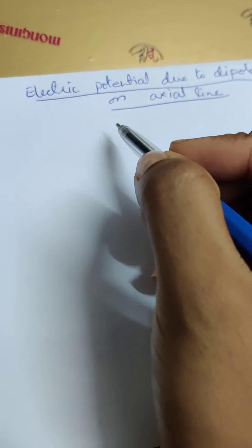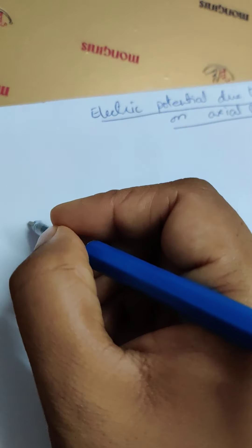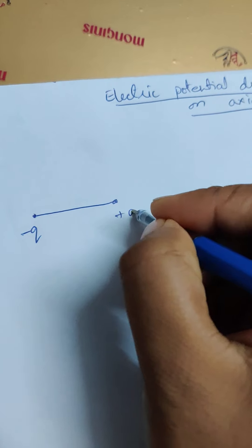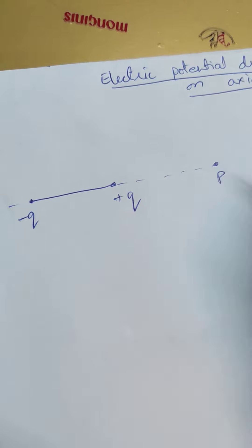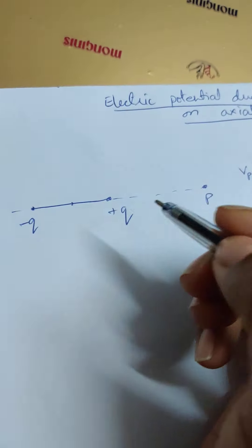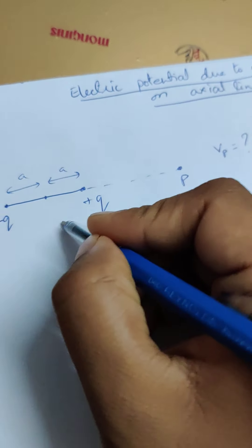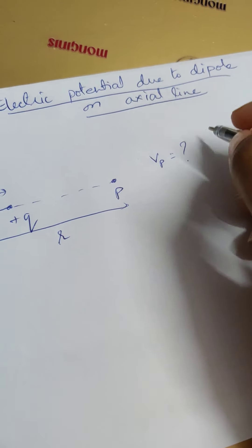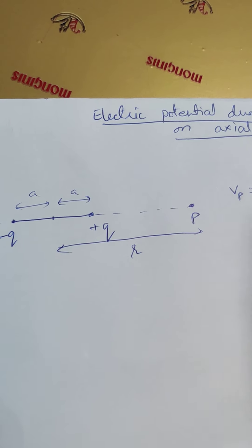Now we find electric potential due to a dipole on the axial line. Here is the dipole with charges minus q and plus q, and this is the axial line. At any point P we have to find the potential Vp — it's a scalar quantity. The midpoint of the dipole is marked, so each half-length is a, and the distance from the midpoint to P is r. The potential at P equals the potential due to the positive charge plus the potential due to the negative charge.